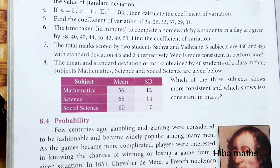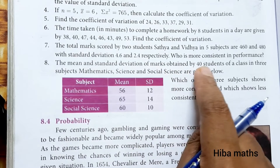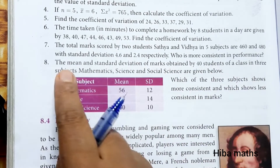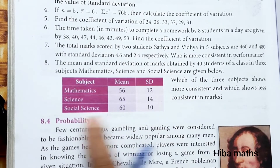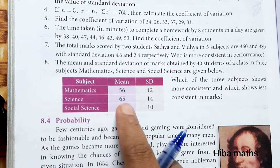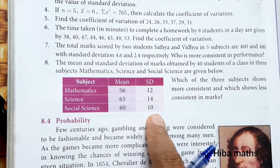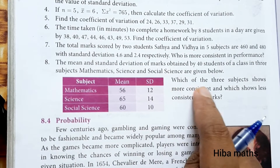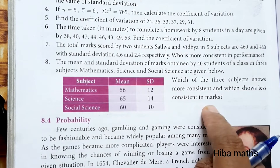Hello students, welcome to Class 10 Standard, Chapter 8, Exercise 8.2. The question: the mean and standard deviation of marks obtained by 40 students of a class in three subjects — Mathematics, Science, and Social Science — are given below. Mathematics: mean 156, standard deviation 12. Science: mean 165, standard deviation 14. Social Science: mean 60, standard deviation 10. Which of the three subjects shows more consistent and which shows less consistent in marks?